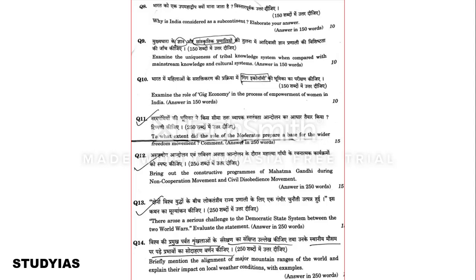Question thirteen: There arose a serious challenge to the democratic state system between the two World Wars — evaluate the statement. You need to evaluate this statement related to the World Wars. Question fourteen: Briefly mention the alignment of major mountain ranges of the world and explain their impact on local weather conditions with examples.